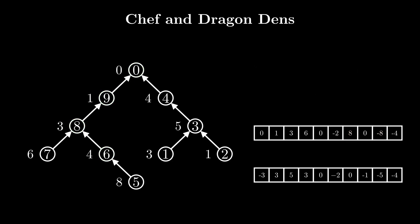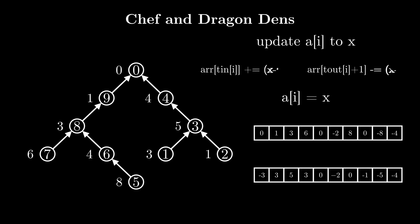Now let's consider how to deal with updates. An update essentially just changes the value of A[i]. If we update A[i] to x, its contribution changes by x - A[i] at two points: T_in[i] and T_out[i]+1. So we add x - A[i] to arr[T_in[i]] and subtract x - A[i] from arr[T_out[i]+1], then update A[i] to x.